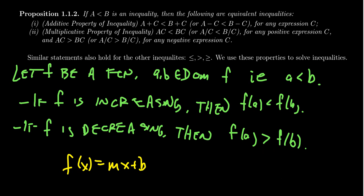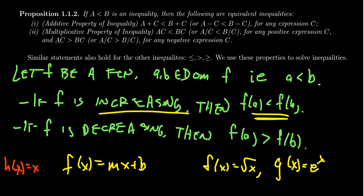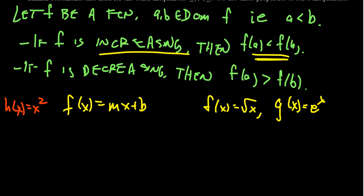For example, f(x) = sqrt(x), the square root function, is an increasing function, so this property applies. g(x) = e^x, the natural exponential, is also an increasing function, so this rule applies when solving inequalities. On the other hand, h(x) = x squared is neither increasing nor decreasing overall — it's increasing from 0 to infinity but decreasing from negative infinity to 0. Since that function switches its monotonicity, solving inequalities involving it is a bit more complicated, which is why we'll talk about quadratic inequalities more in the future. But other than that, solving an inequality works just the same way as solving an equation — just make sure you pay attention to whether the function is increasing or decreasing.